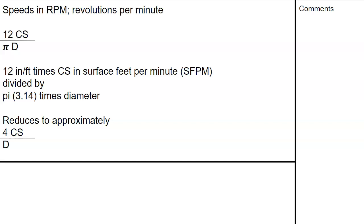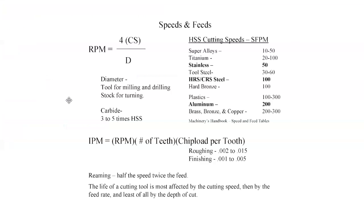For speeds in RPM, the formula goes from feet per minute to RPM: 12 inches per foot times the cutting speed, divided by pi times the diameter (circumference of the tool). This reduces to approximately 4 × cutting speed / diameter, which gives us a simpler formula that gets us close enough. We go to the Machinery's Handbook or manufacturer's recommendations to find the cutting speed for the material. Nothing replaces observe and react — if it's making noise, grumbling, the tool's dull, or the machine isn't rigid enough, you make all those determinations; that's where feel and experience come in.